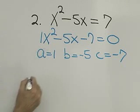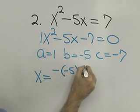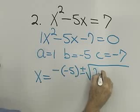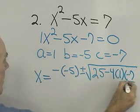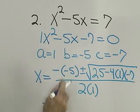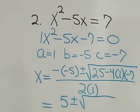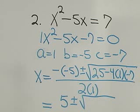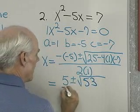Next, I put these numbers into the quadratic formula. So x is equal to negative b plus or minus the square root of b squared minus 4 times a times c, all divided by 2 times a. I'll continue to simplify here. The opposite of negative 5 is 5, plus or minus the square root of 25 minus 4 times 1 times negative 7 — that'll be a positive 28. So 25 plus 28, that's going to come out to be 53. That's all over 2.